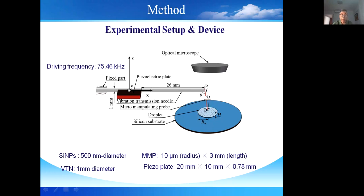Let's look at the device. The device consists of a microprobe, vibration transmission needle, and piezoelectric component. The piezoelectric component excites the whole device to vibrate due to the vibration of the microprobe. In the droplet, there is an ultrasonic field. With this ultrasonic field, we can concentrate the nanosamples in the droplet.